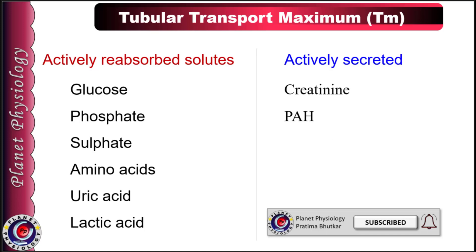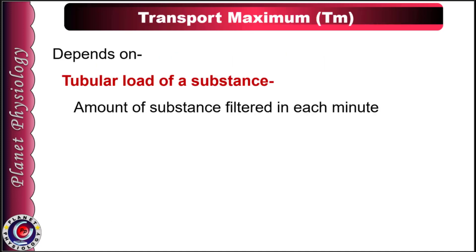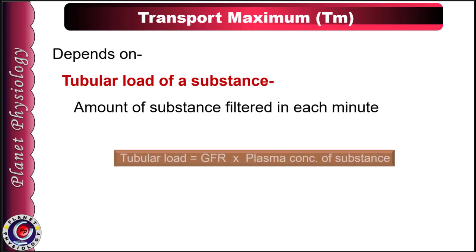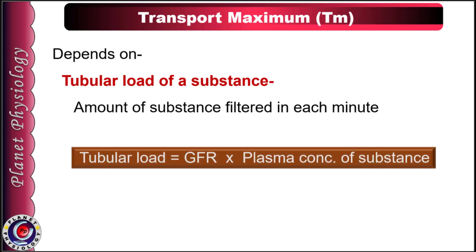The value of transport maximum depends on the tubular load of a given substance. Tubular load is the amount of substance filtered by the nephrons in each minute. Thus, tubular load depends on glomerular filtration rate and plasma concentration of the substance. We can calculate it by multiplying GFR by plasma concentration of the substance.